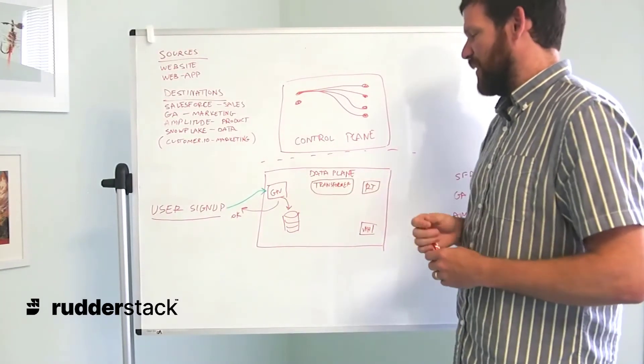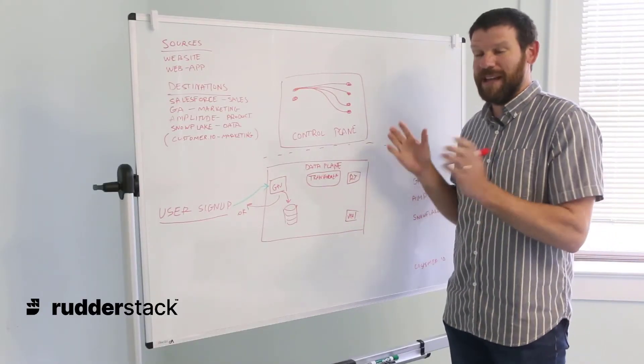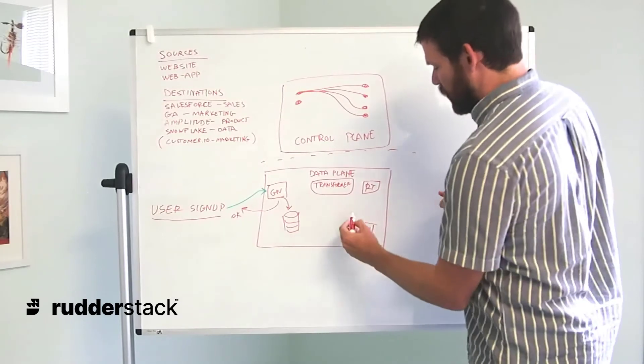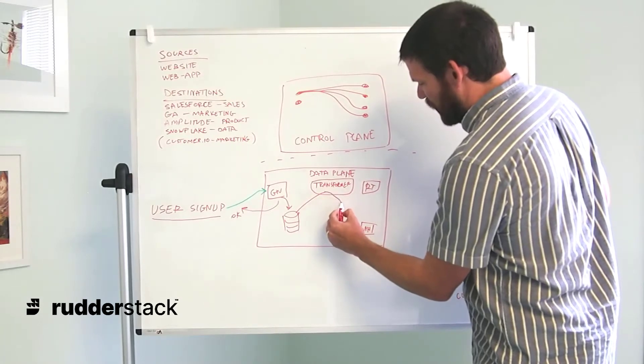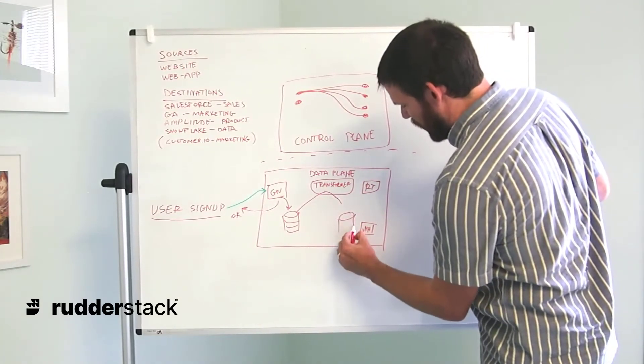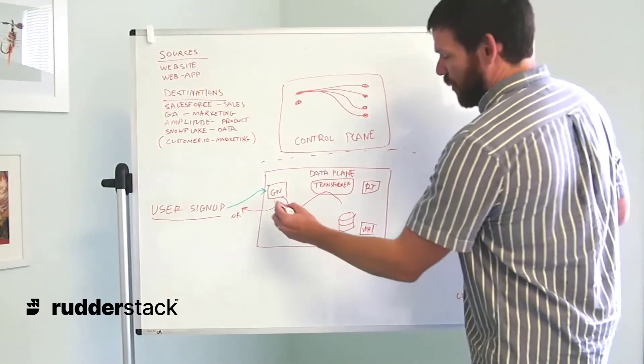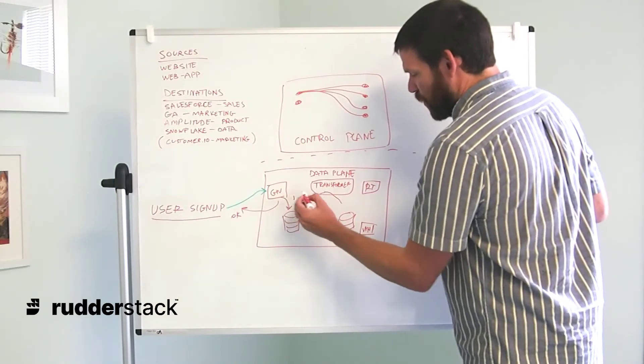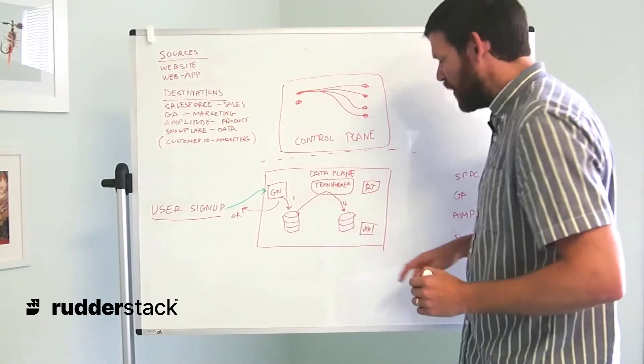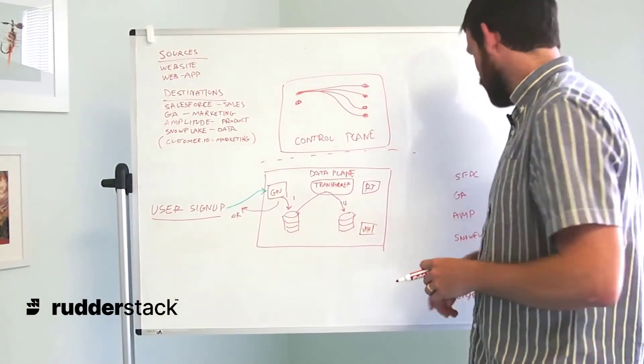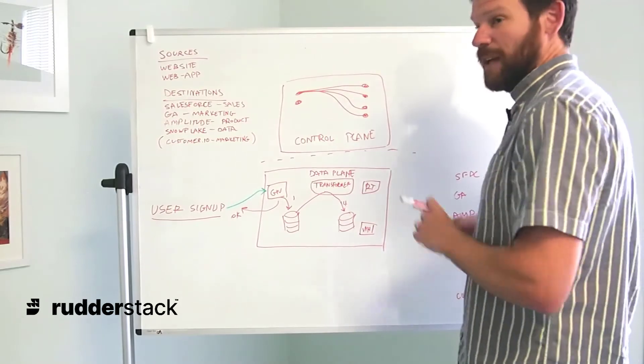Once we've ingested these events into the gateway Postgres table, we're going to have to process them. To process them, we need to get them in the format of what the downstream tool needs. They're going to go through the transformer, which is going to change them to the proper format. Then it's going to store them again, temporarily in another Postgres table, storing the events that need to go into the downstream tools. Where we have one event coming in right here, we're going to have, in this case, four events going into the router Postgres table. These are events that have now been transformed into the format that Salesforce or Google Analytics or Amplitude or Snowflake need to accept those events.